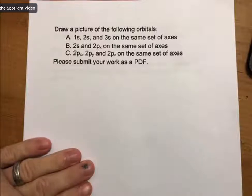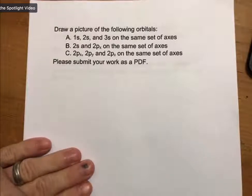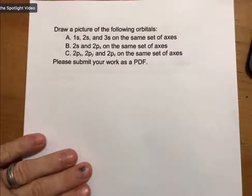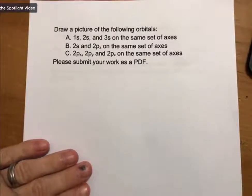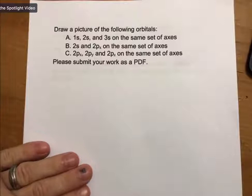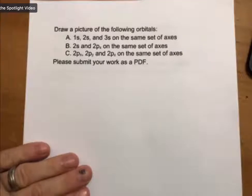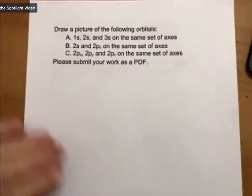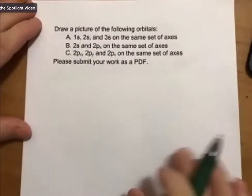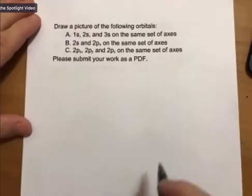This is not covered in the lecture outline, so this is totally new material. I apologize for this. The question says draw a picture of the following orbitals: A, 1s, 2s, and 3s on the same set of axes. Let's tackle that one first.